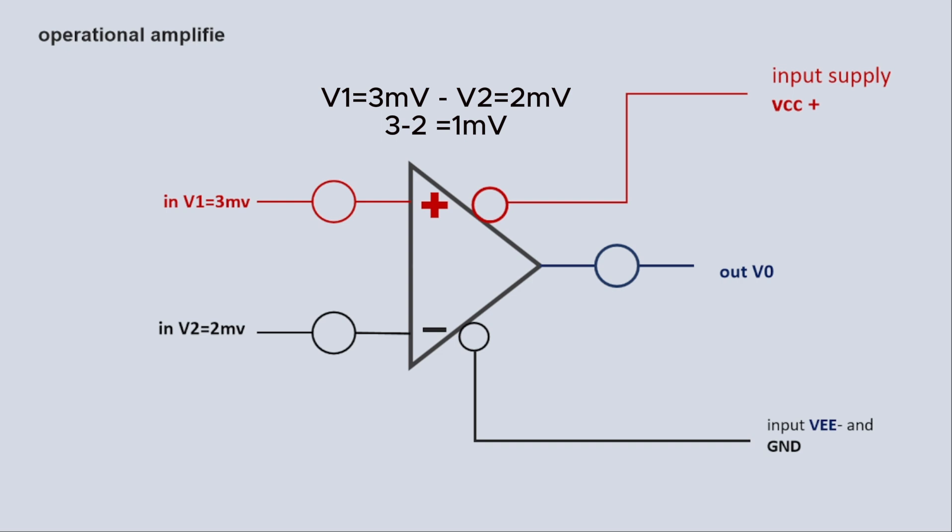The differential voltage is 1 millivolt. 1 millivolt will be amplified. This is the differential amplifier. And one thing you have to notice in this is gain.